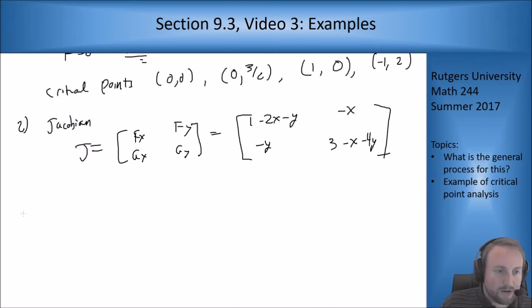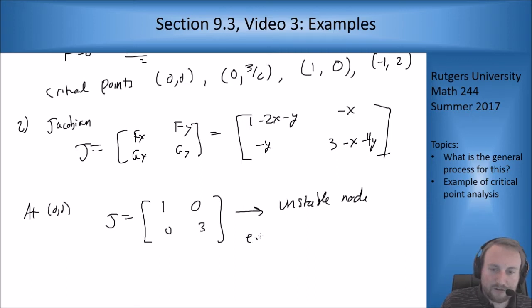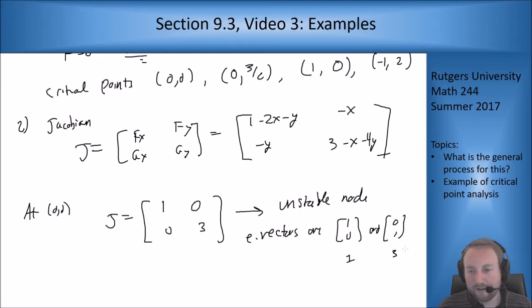At (0,0), J is [1, 0; 0, 3]. This is an unstable node with eigenvectors (1,0) and (0,1), eigenvalue 1 and eigenvalue 3 respectively.